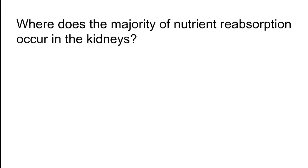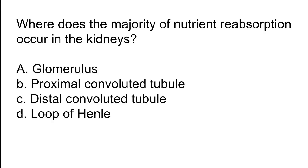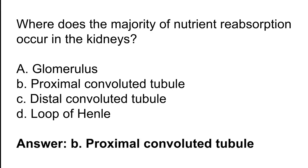Where does the majority of nutrient reabsorption occur in the kidneys? Options: A) Glomerulus, B) Proximal convoluted tubule, C) Distal convoluted tubule, D) Loop of Henle. The correct answer is option B. The majority of nutrient reabsorption occurs in the proximal convoluted tubule of the kidneys.